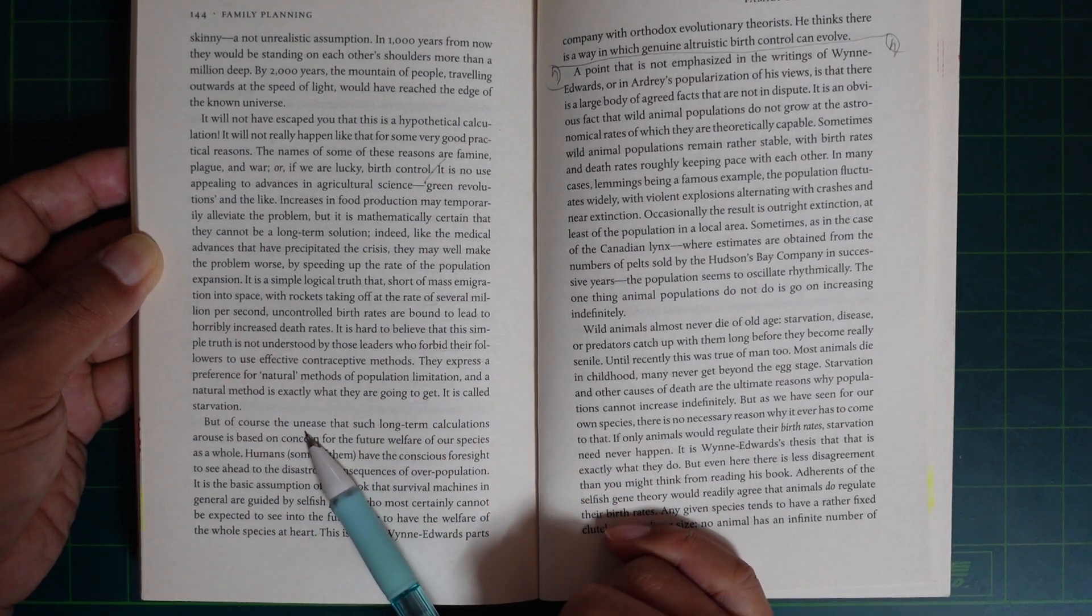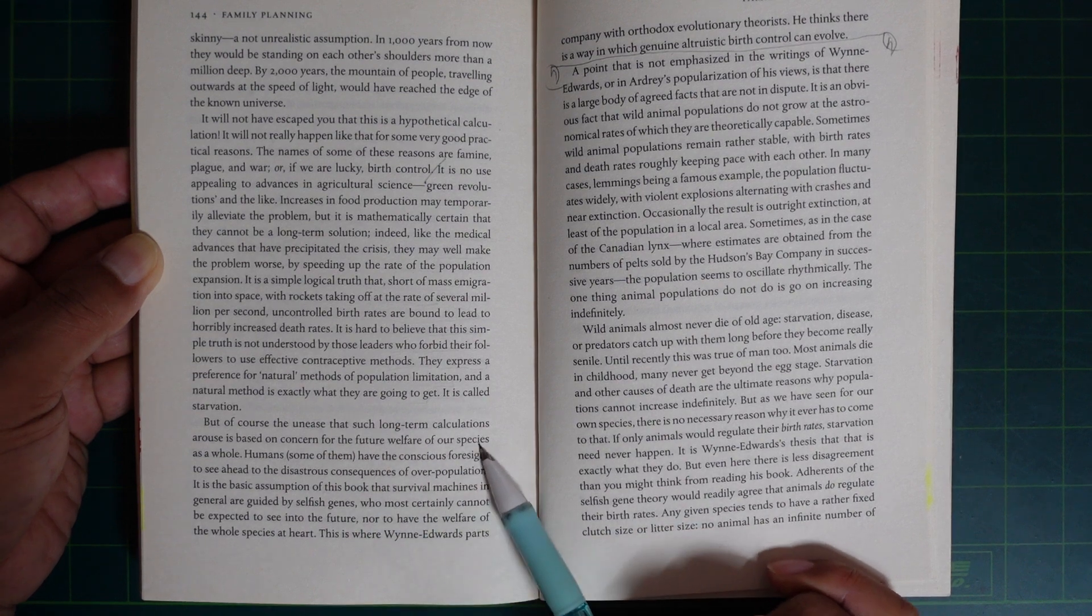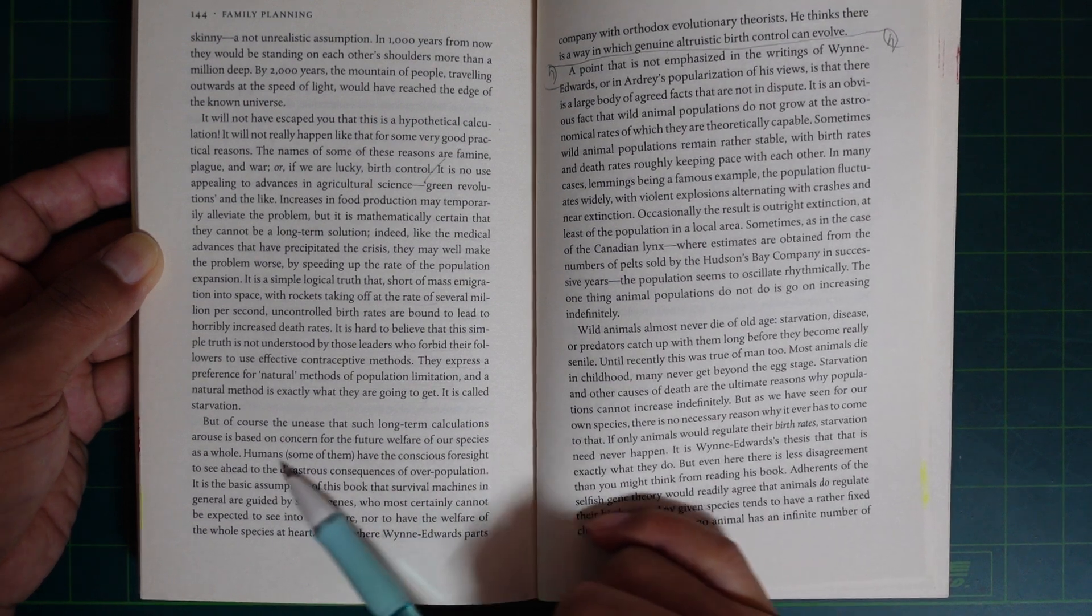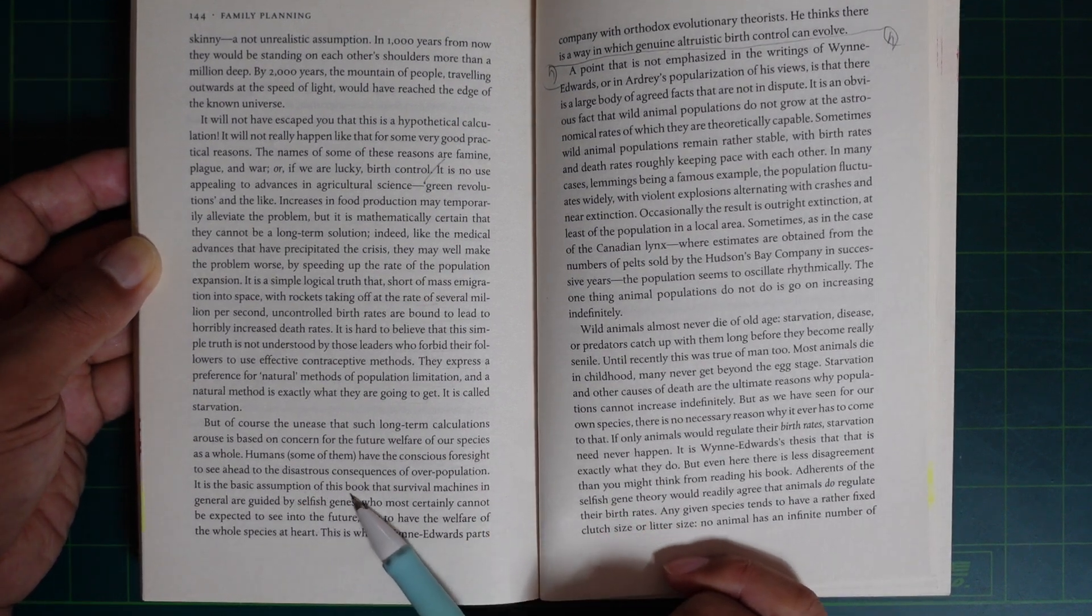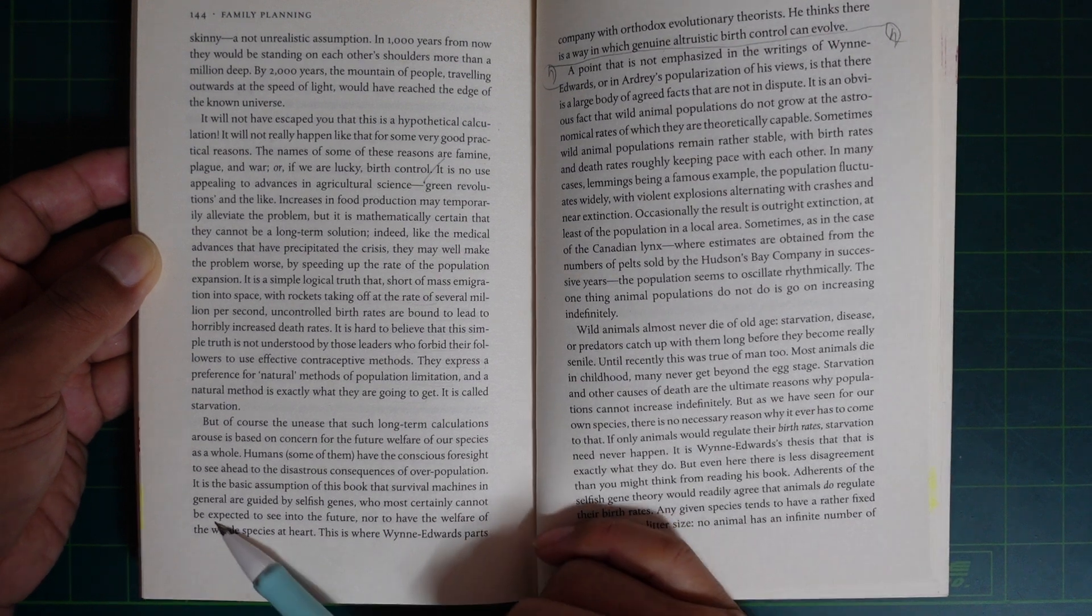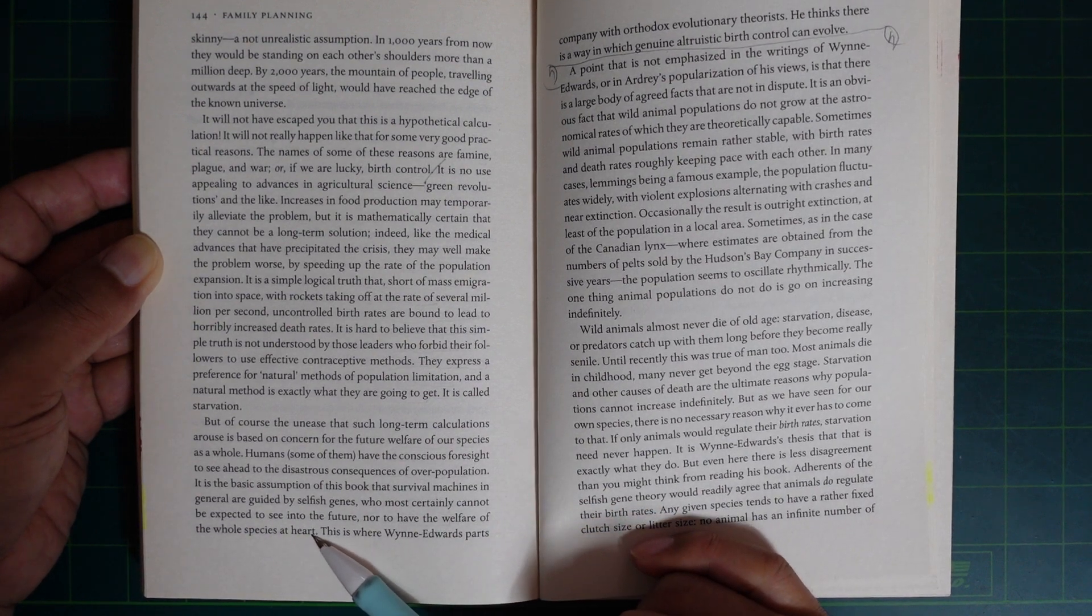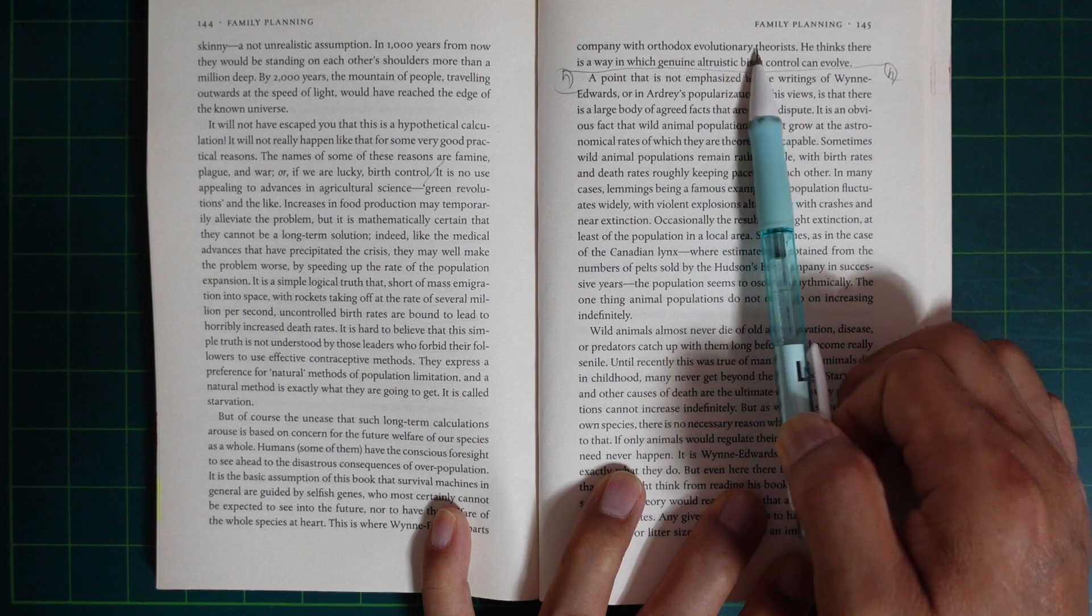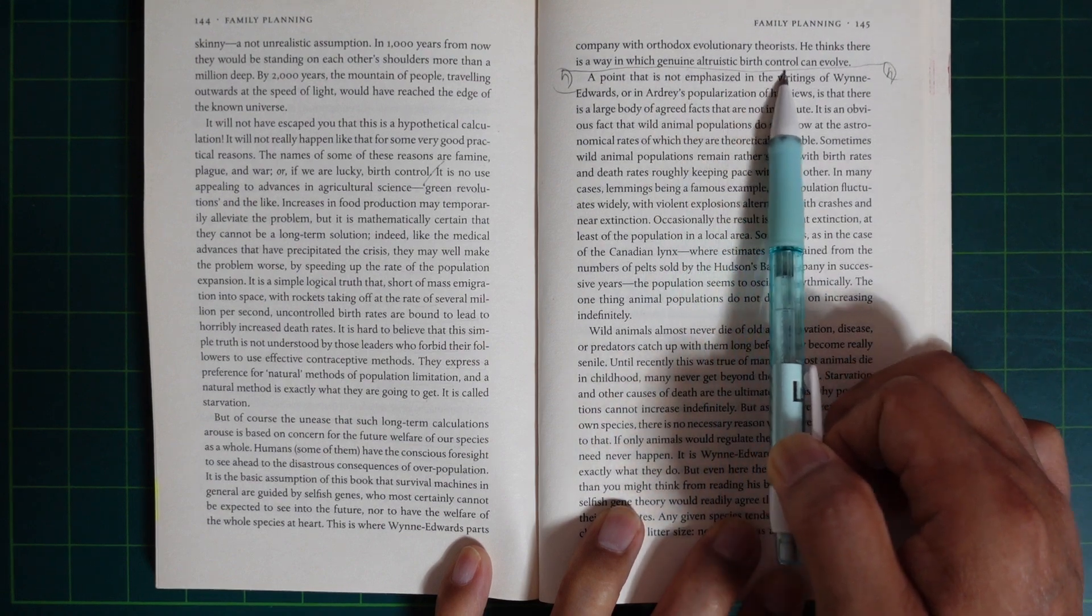But of course, unease at such long-term calculations arises from concern for the future welfare of our species as a whole. Humans, or some of them, have the conscious foresight to see ahead to the disastrous consequences of overpopulation. It is the basic assumption of this book that survival machines in general are guided by selfish genes who most certainly cannot be expected to see into the future nor to have the welfare of the whole species at heart. This is where Wynne-Edwards parts company with orthodox evolutionary theory. He thinks there is a way in which genuine altruistic birth control can evolve.